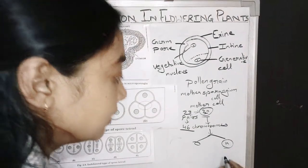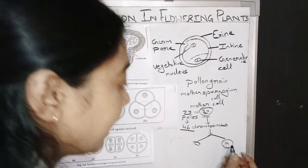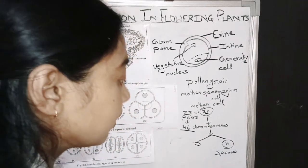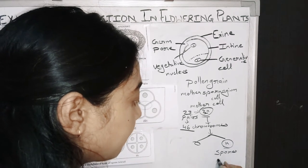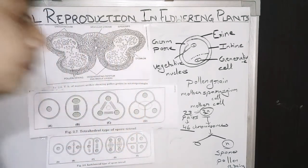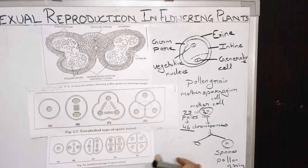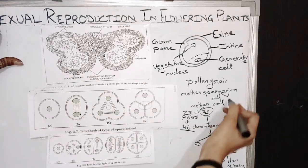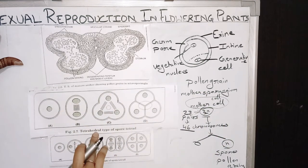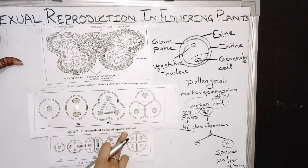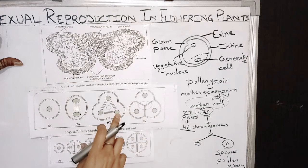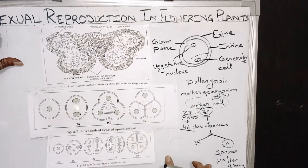The N cell is going to be formed. This N cell is called as spores, or we can call it pollen grains. So the mother cell can be arranged in the tetrad form — tetrahedral type of spore tetrad. This is the arrangement of the mother cell which gives rise to the spores.